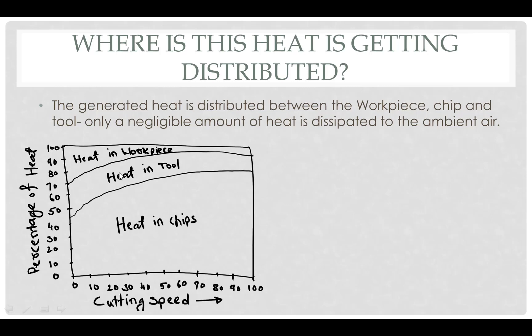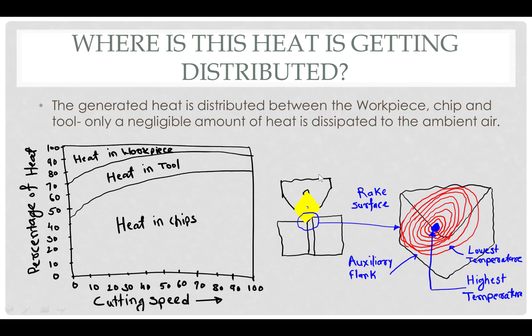An important concept: the highest temperature in the cutting zone is located a little bit away from the tool nose radius or tip. As a manufacturing engineer, this is significant because cutting fluid or coolant is directed toward exactly this point. If you look at the geometry of a tool holder or shank with through-coolant, the coolant is directed to this high-temperature zone — which is why knowing where the highest temperature is generated matters.